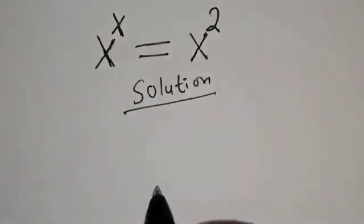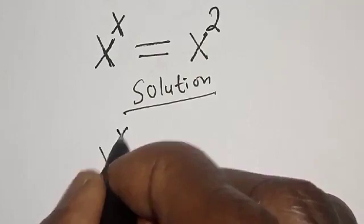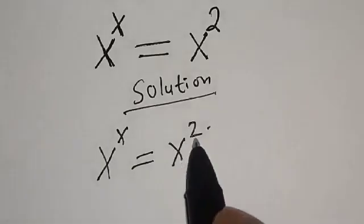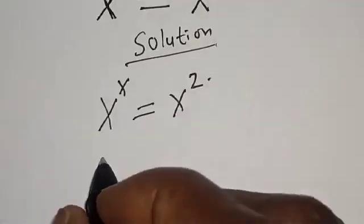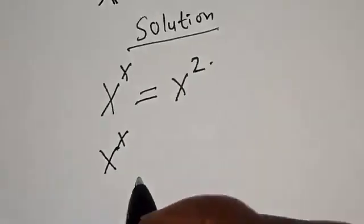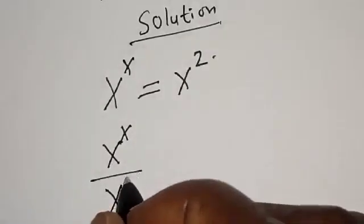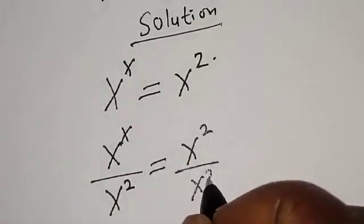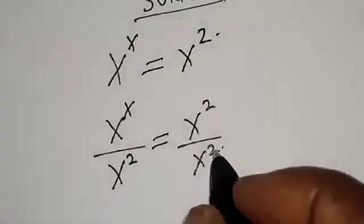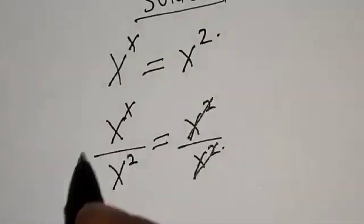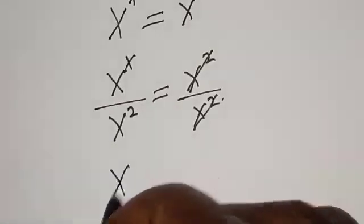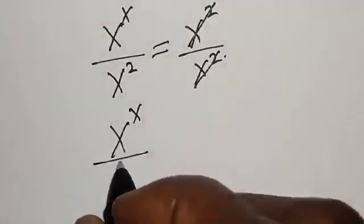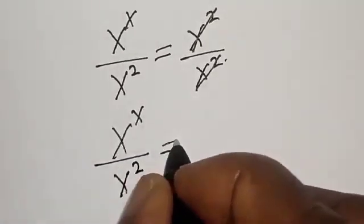We have the given equation s raised to power s is equal to s squared. Now let's divide both sides by s squared. We have s raised to power s divided by s squared is equal to s squared divided by s squared. This one will cancel this, so the left hand side becomes s raised to power s divided by s squared, which is equal to one.